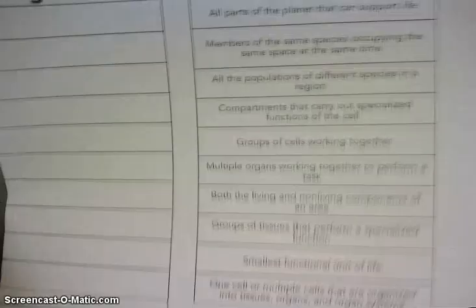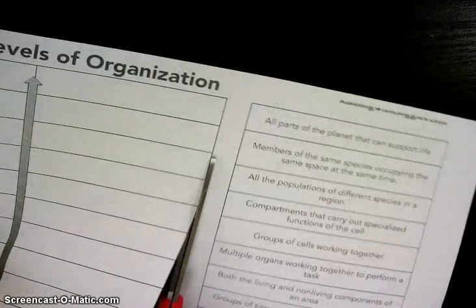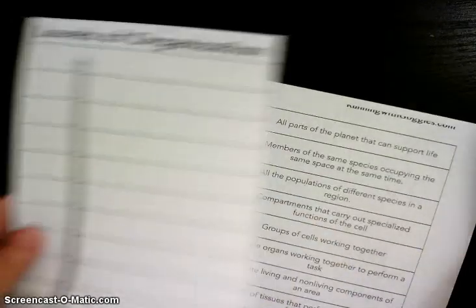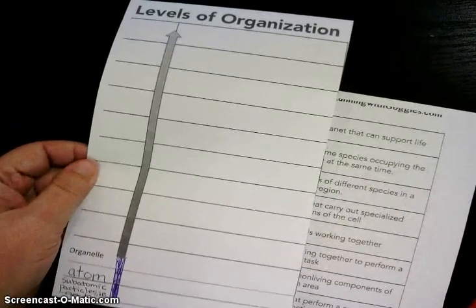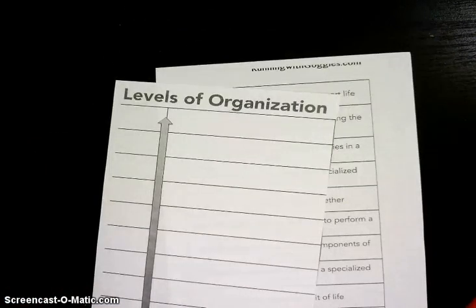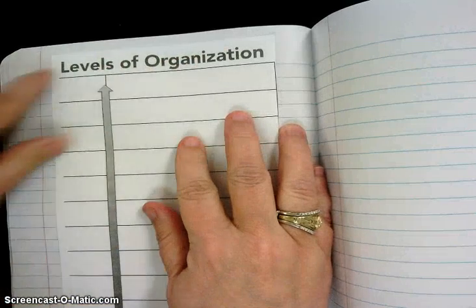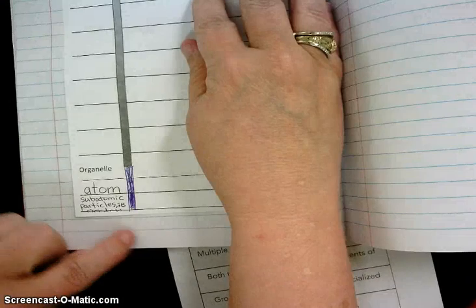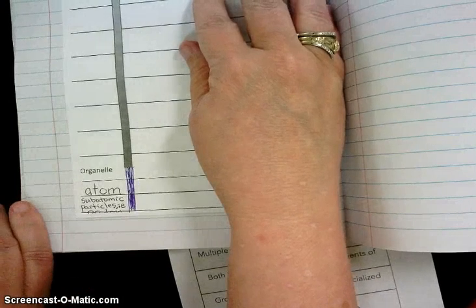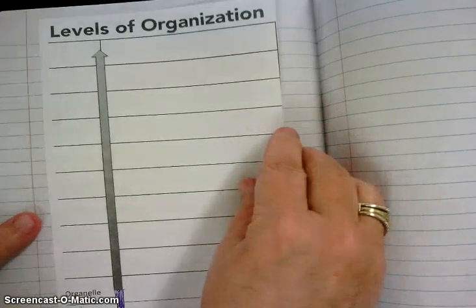We're going to extend this arrow down the side here. The first thing I want you to do is to cut along this line, and you're going to glue this onto page 80 in your journal. Make sure that the levels of organization is at the top like it would be for a heading, so that you have room to write below here. We need about one or two lines to write below there. Go ahead and cut and glue that in while you pause the video.